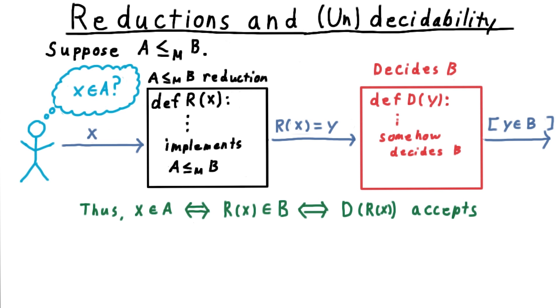This works because by the definition of a reduction, X is in A if and only if R of X is in B, and by the definition of a decider, this is true if and only if D accepts R of X. Therefore, the output of D tells me whether X is in A.